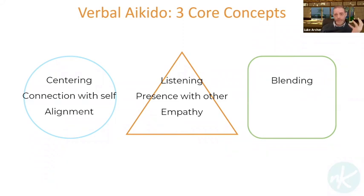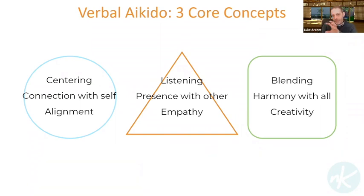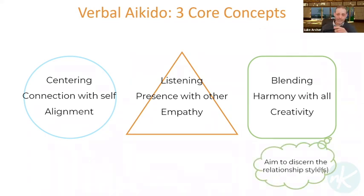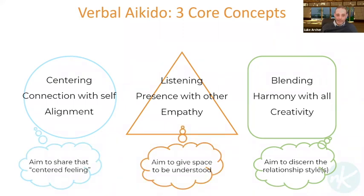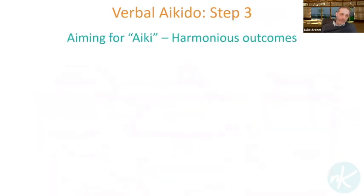Blending is the idea of ike — being in harmony with everything that's going on around you. This step requires quite a lot of creativity because you're taking from what you've understood from the other person, combining it with your own alignment, and seeing how you can match these together or find connections. In essence, you're aiming at discerning what sort of relationship is possible, and then you can propose it or simply recognize it.